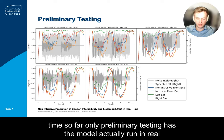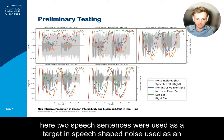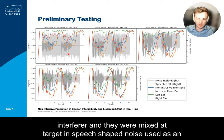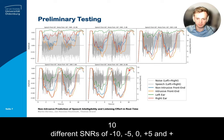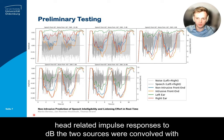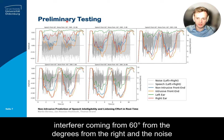So far only preliminary testing has been done, as can be seen on this slide. Two speech sentences were used as a target, with speech-shaped noise as an interferer, mixed at different SNRs of minus 10, minus 5, 0, plus 5, and plus 10 dB. The two sources were convolved with head-related impulse responses to simulate a setting where the target speech was presented lateralized to 60 degrees from the right and the noise interferer coming from 60 degrees from the left.